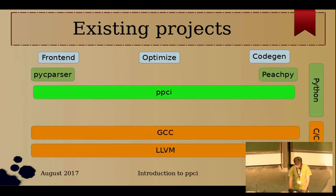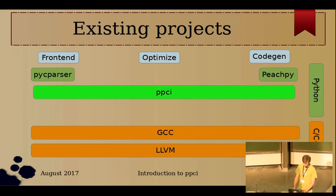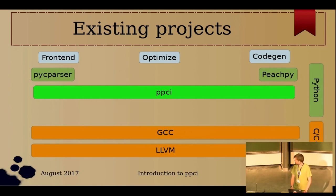Here's an overview of existing projects. At the bottom are compilers implemented in C++: GCC and LLVM, and probably Visual Studio too. Then there are tools implemented in Python — this is a far-from-complete overview. For front-ends there's a C parser that transforms source code into an AST, and at the far right there's the peachpy library for emitting machine code instructions. The connection between those two is where you should think of the PPCI project.